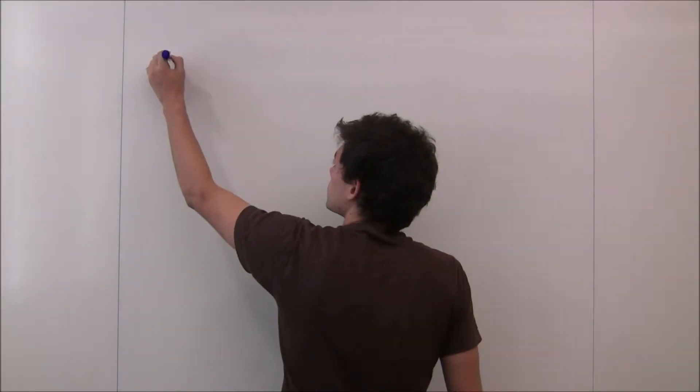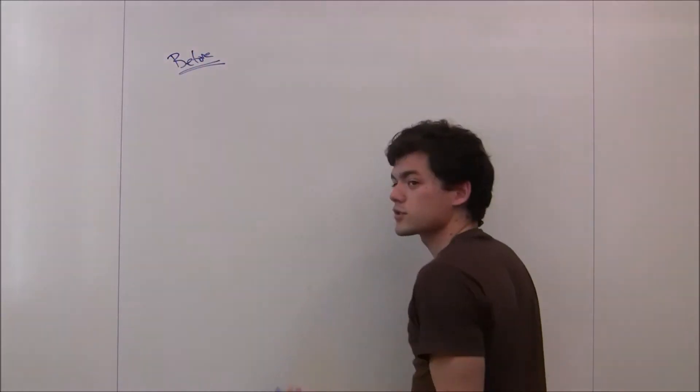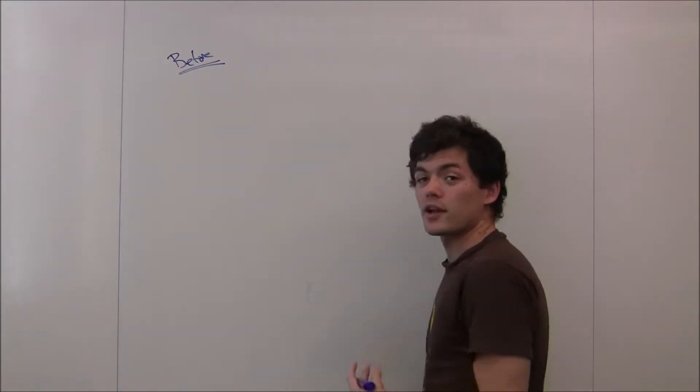So in order to solve this, all we're going to do is draw a before and after picture. And then we're going to conserve momentum, because the two balls are going to be an isolated system. And our answer will come out of that.